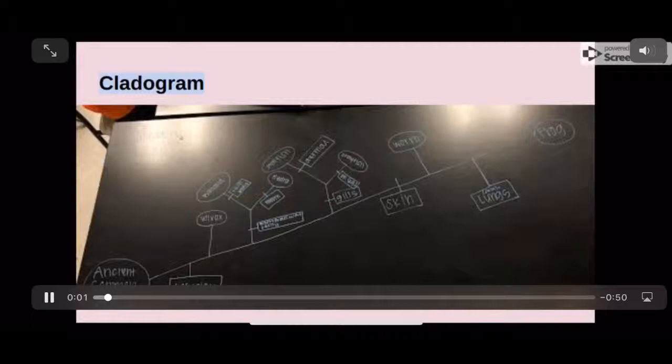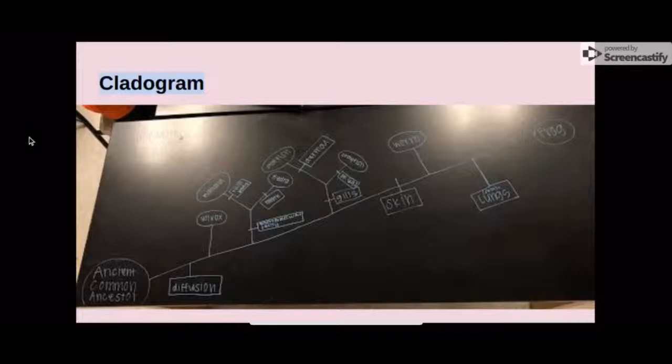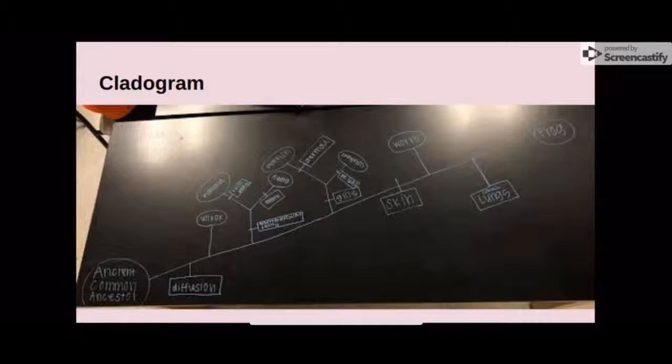This is our cladogram that shows all the organisms' relationships between their respiratory systems. All organisms stem from a common ancient ancestor. The volvox uses diffusion through its skin or body. The planaria uses diffusion through its gastrovascular cavity on its thin body. The hydra uses diffusion through its gastrovascular cavity on its mouth. The starfish uses diffusion through its dermal gills. The crayfish uses diffusion through its gills on their legs. The worm uses diffusion through its skin. The frog uses diffusion through its skin and lungs.